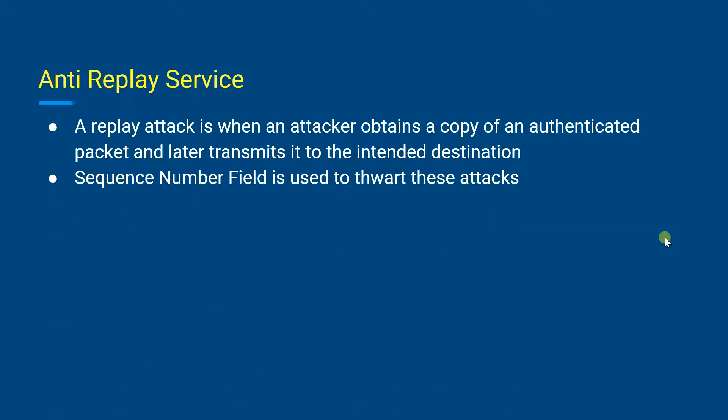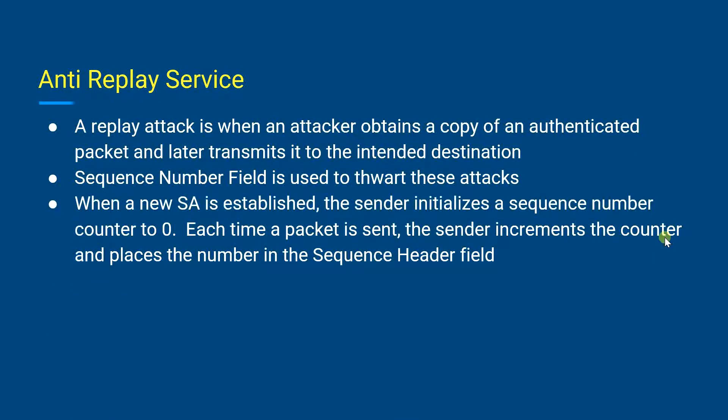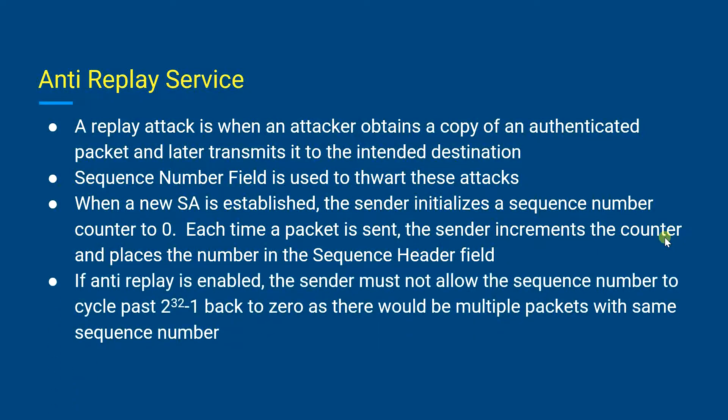When a new security association is established, the sender will initialize a sequence number counter to zero. Each time a packet is sent on this particular security association, the sender will increment the counter and place the value in the sequence number field. So the first value to be used will be equal to one. And if the anti-replay is enabled...